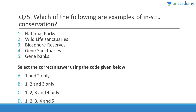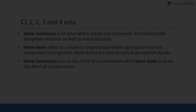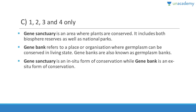Question 75: Examples of in-situ conservation include wildlife sanctuaries, national parks, biosphere reserves, and sacred groves. Gene sanctuaries are also a form of in-situ conservation because they conserve plants within a biosphere reserve or national park. Gene banks, however, are biological laboratories and are totally different.